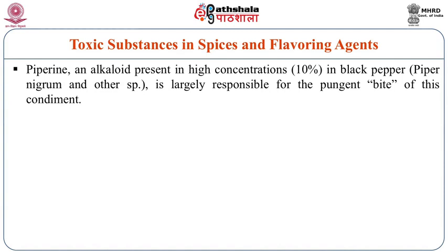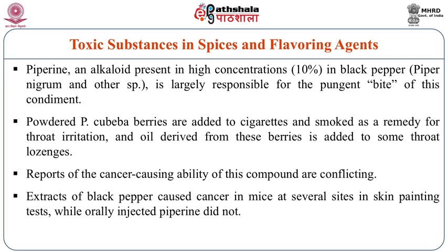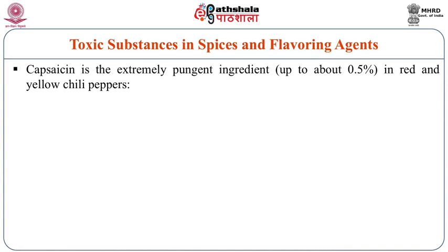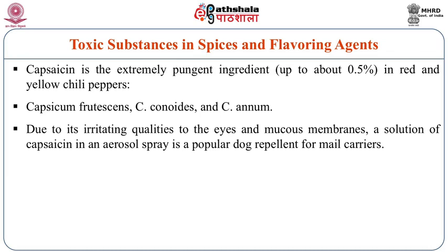Piperine is the next toxicant — an alkaloid present at high concentrations of up to 10% in black pepper, largely responsible for the pungent bite of the condiment. Powdered piperine berries are added to cigarettes and smoked as a remedy for throat irritation, and the oil derived from these berries is added to some throat lozenges. Capsaicin is an extremely pungent ingredient present at almost 0.5% in red and yellow chili peppers, for example in Capsicum frutescens, annuum and chinense.